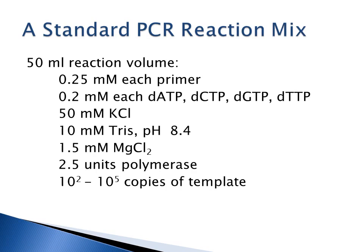A standard PCR reaction mix for a 50 µL reaction volume contains 0.25 mM of each primer (forward and reverse), 0.2 mM each of dATP, dCTP, dGTP, and dTTP, 50 mM potassium chloride, 10 mM Tris at pH 8.4, usually 1.5 mM magnesium chloride (though you may need to increase this), 2.5 units of Taq polymerase enzyme, and between 10² to 10⁵ copies of your template.